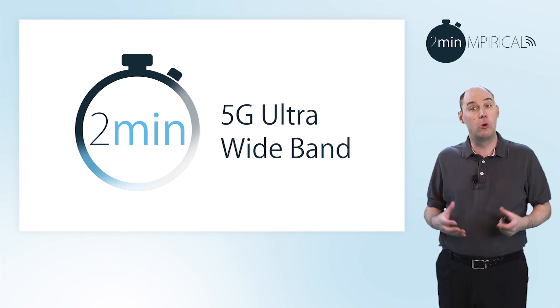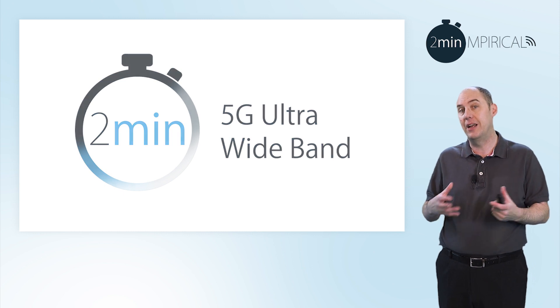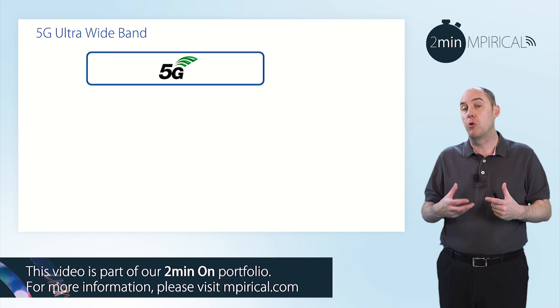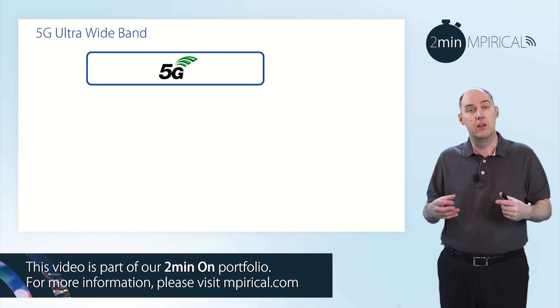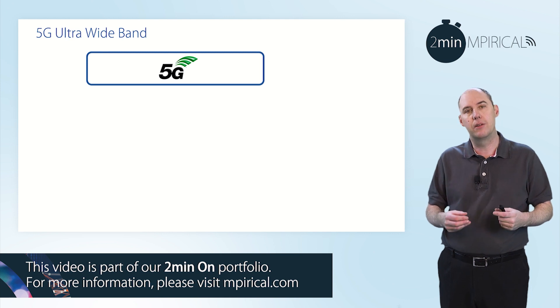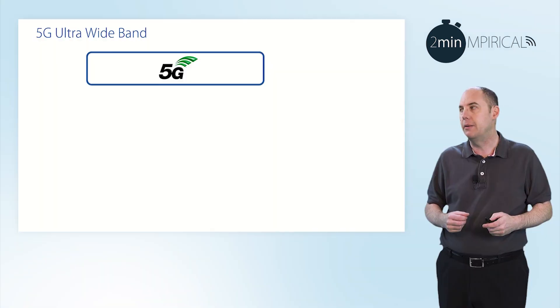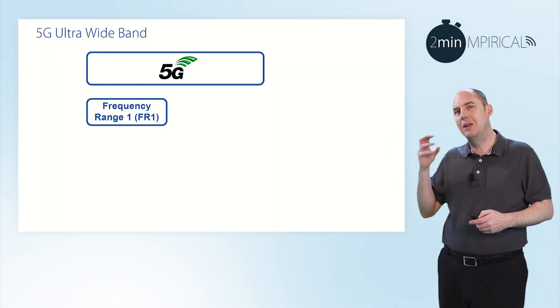When describing ultra wideband, there are actually two definitions that we could look at. The first is where, more historically, ultra wideband was linked to very low range wideband signals, similar to where you might find Bluetooth. However, more recently, it's been linked to 5G, and certain service providers when deploying their 5G network have said they have an ultra wideband signal. What does that actually mean? Well, we need to put it into a little bit of context.